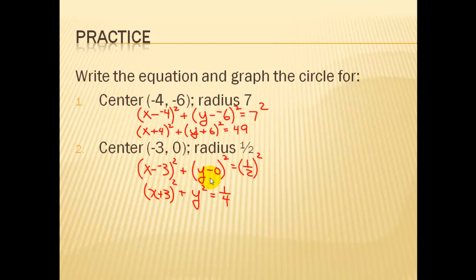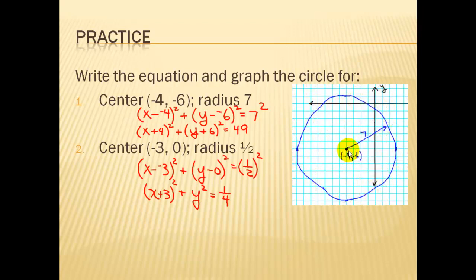Similar for the second problem — you can see our standard equation here. If we graph the top one, we place a point at our center, negative 4, 6. To sketch a circle, I start out by going 7 units — which is the radius — in all four directions, and then draw the circle. Remember we can't count 7 on the diagonals, because the length across a block on the diagonal is not 1. So when counting 7 units, you have to go horizontal or vertical.